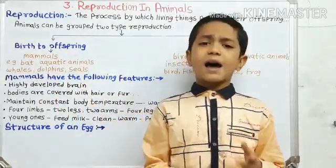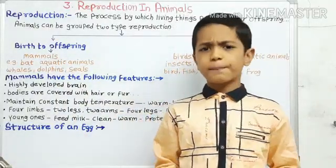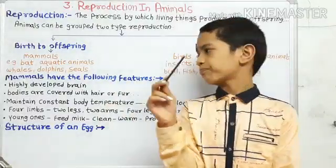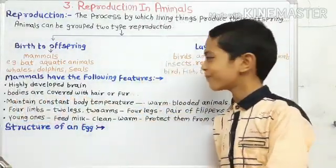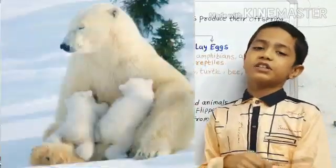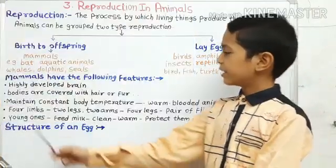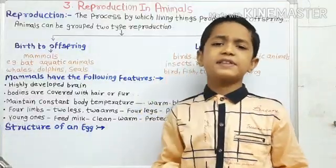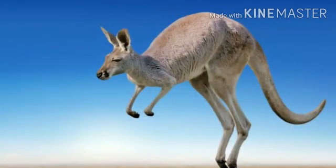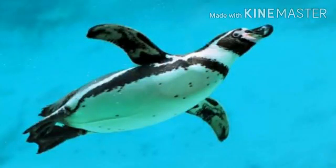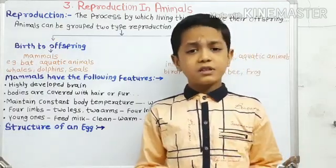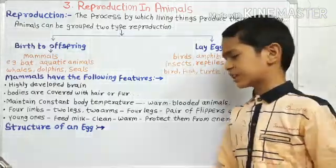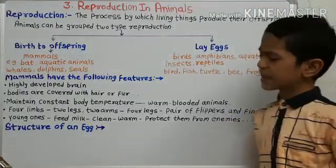Now we know the mammals and their habitats, but let's look at some features of a mammal to better understand them. Mammals have four limbs — they may have two legs, two arms, four legs, or a pair of flippers and fins to swim. Mammals look after their young ones properly: they feed them with their own milk, keep them clean, keep them warm, and protect them from enemies and climatic changes.